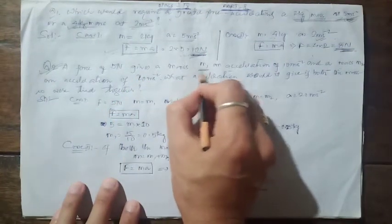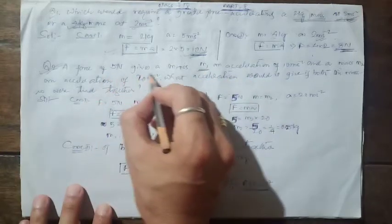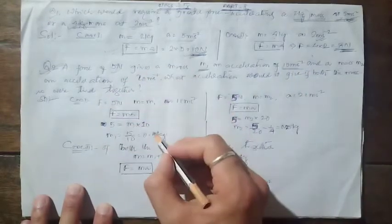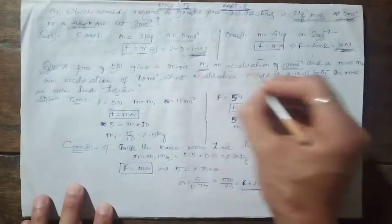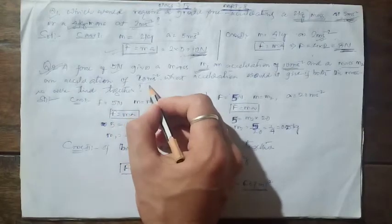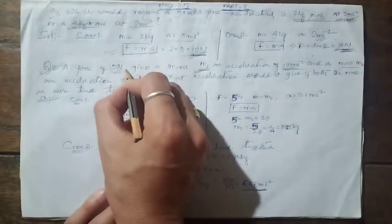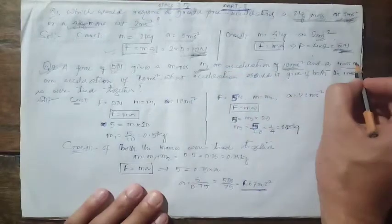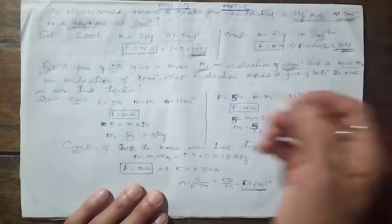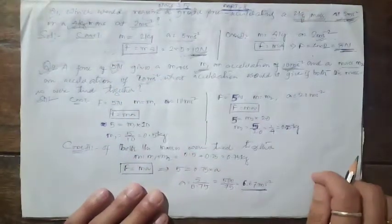Next question: a force of 5 newton gives mass m1 an acceleration of 10 m/s², and gives mass m2 an acceleration of 20 m/s². What acceleration would it give if both masses were tied together? The same 5 newton force is applied to two different unknown masses.